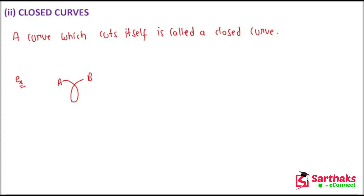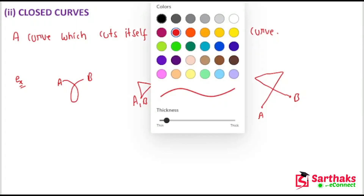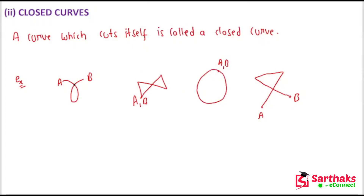Another example of a closed curve cuts at the same point — this is the intersection point. A circle is also a closed curve because when you start at A and finish at the same point, you are cutting the curve at a single point. You can also have a curve that cuts itself at multiple points — marking those intersection points, each is where the curve cuts itself.